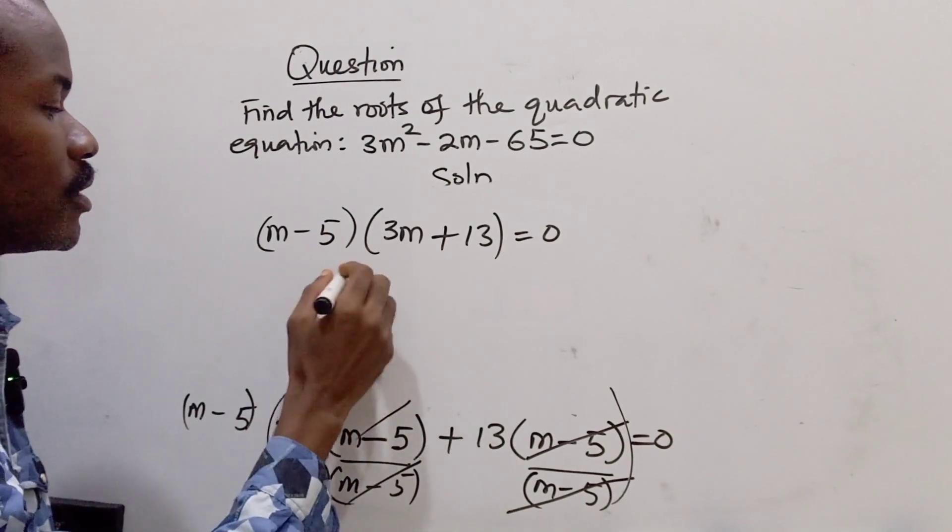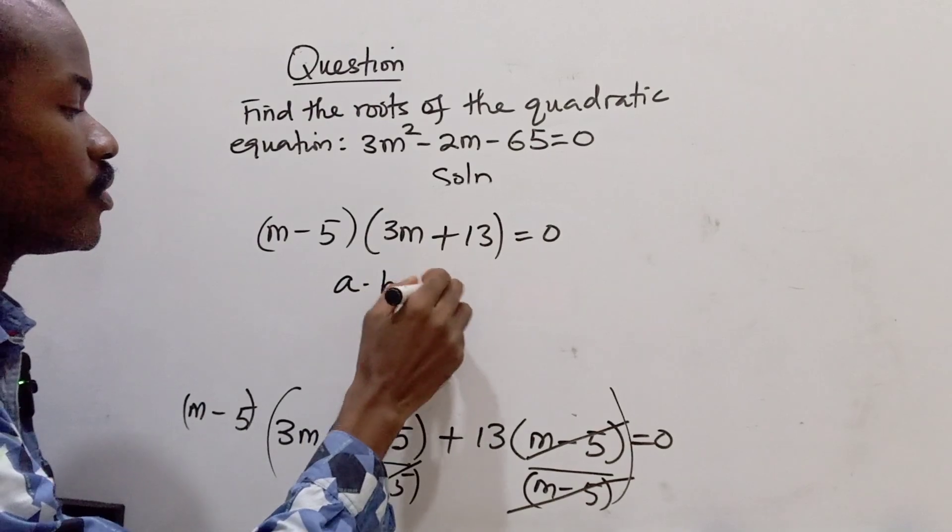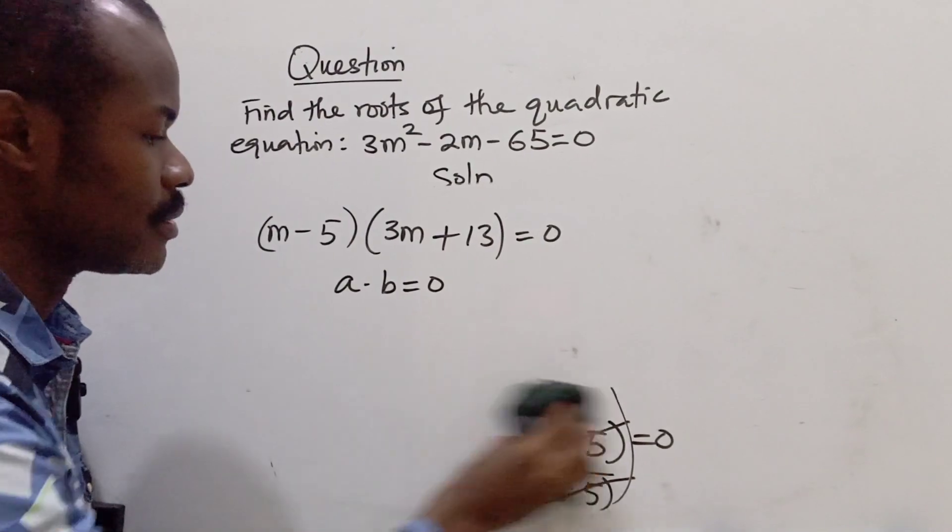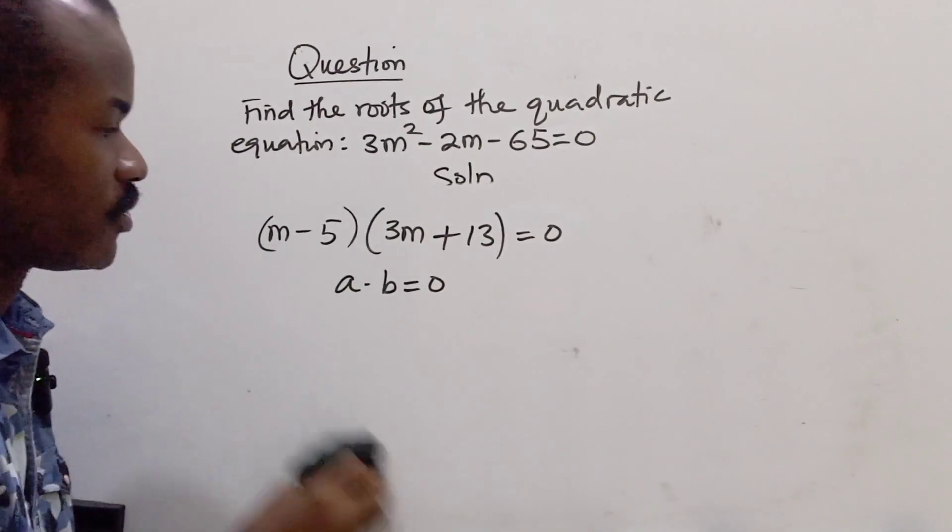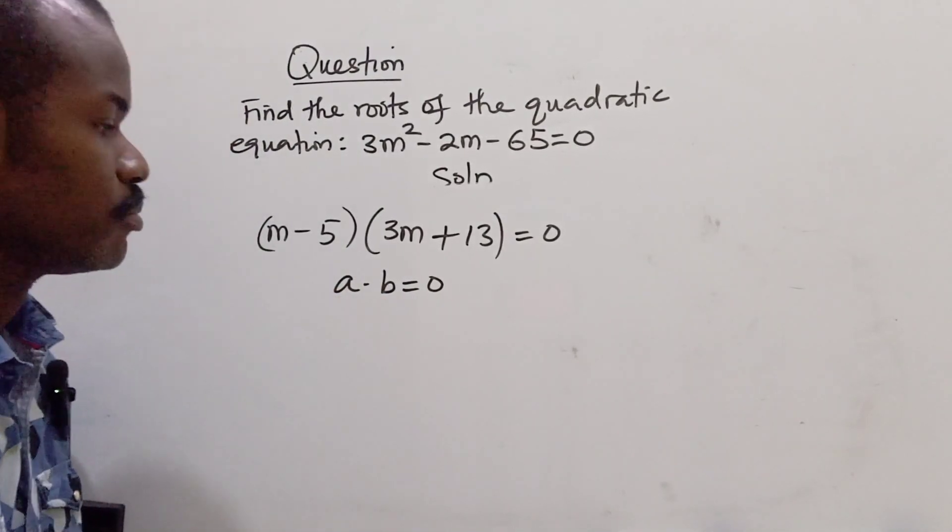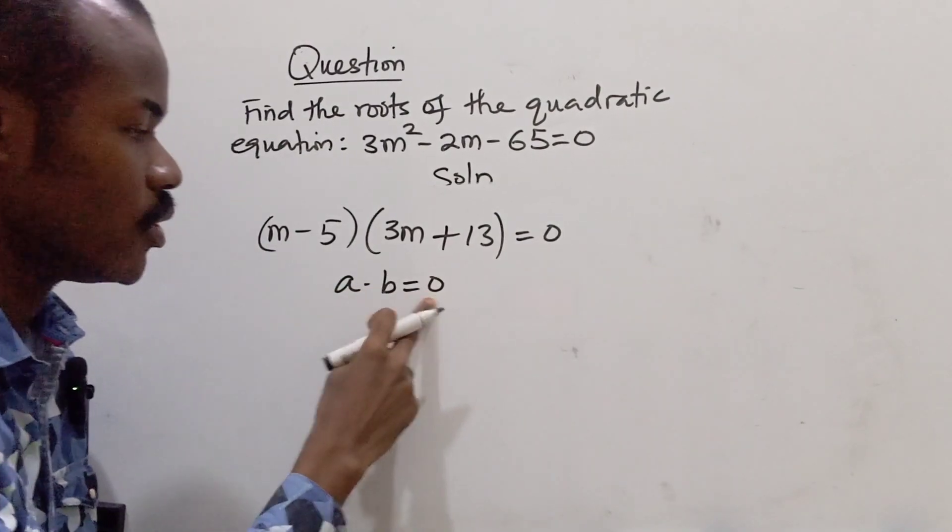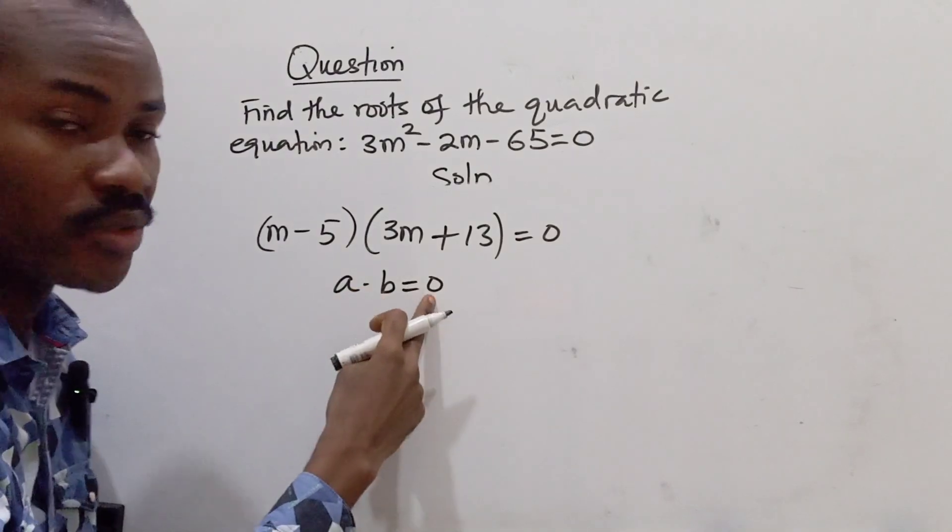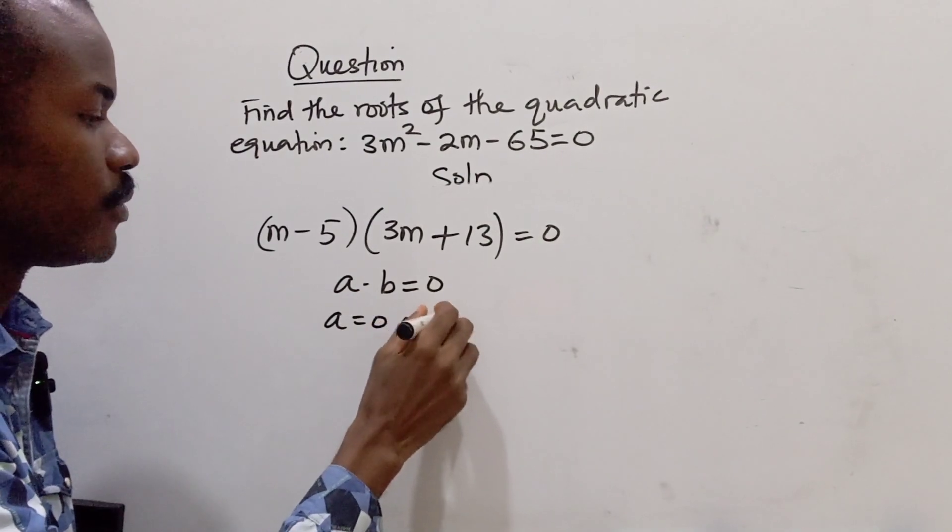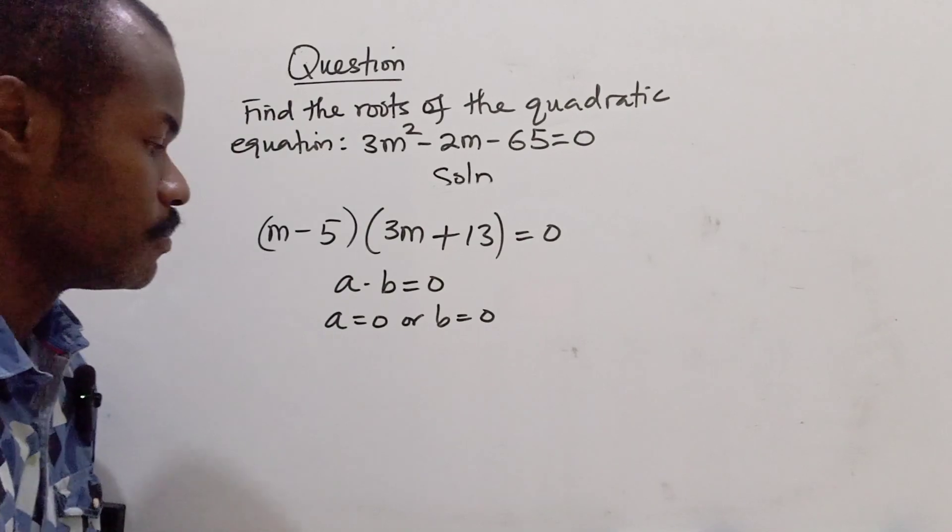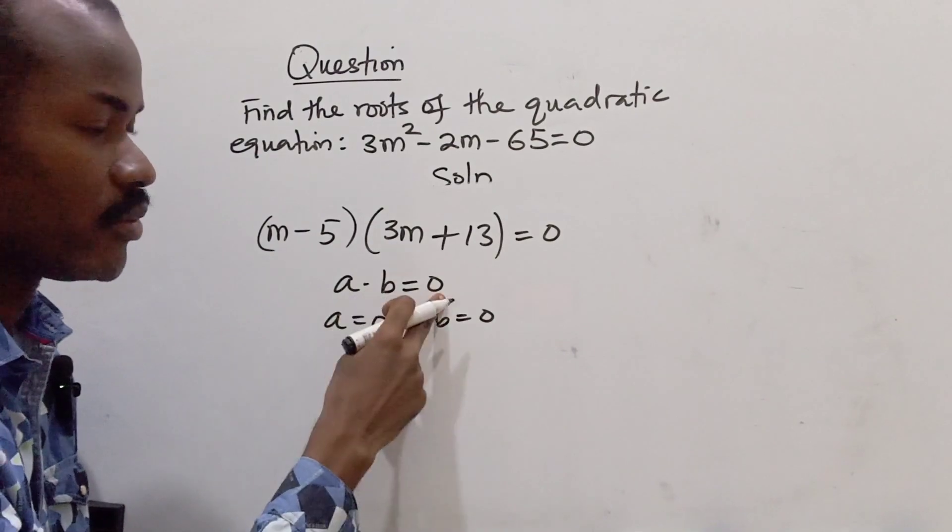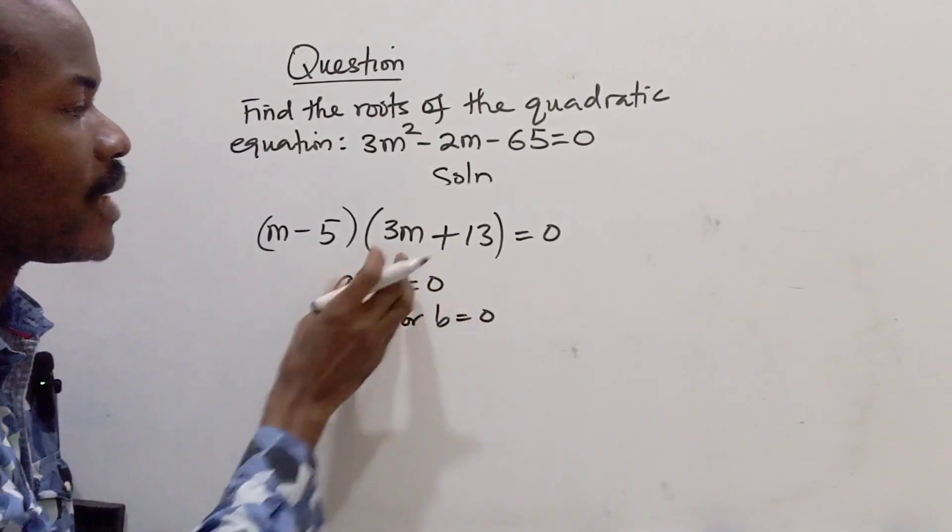We have the condition that if you have a times b equals 0, for this to apply, it means one of these has to be 0. Either a is 0 or b is 0. Because if a is 0, 0 times b is 0. If b is 0, a times 0 is 0. We are going to apply this here.